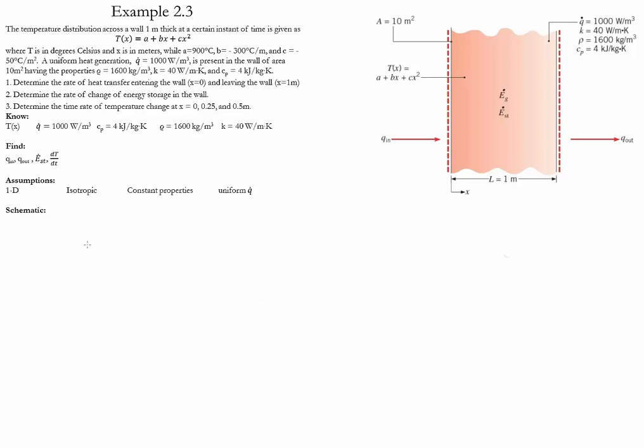The second step is to calculate the rate of energy change that is stored in the wall. To do that, we're going to do a balance of energy. We're going to start with the energy going in minus the energy out. The energy that is generated has to be equal to the rate of change of the energy stored.